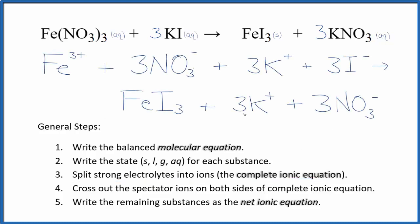So this is the complete ionic equation. Note that this FeI3, our precipitate, the solid, we don't split that apart. It's a solid. So when we have a solid, that stays together in our net ionic equation.